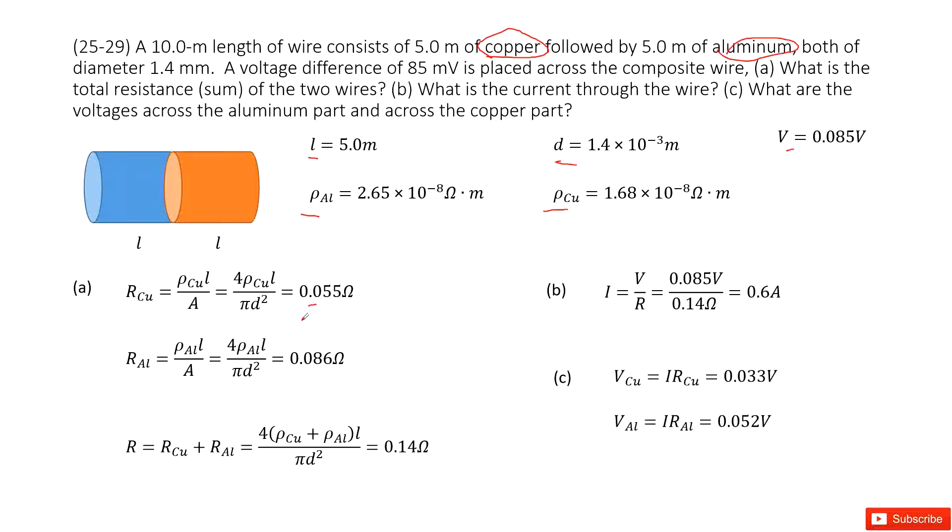Very similarly, we can find the resistance for aluminum, still the resistivity for aluminum times the length L divided by cross-sectional area A. And this cross-sectional area A can be replaced as pi D squared over 4. Input all the given quantities, you get the answer there. Now add this resistance for copper and resistance for aluminum together. You get the answer there.